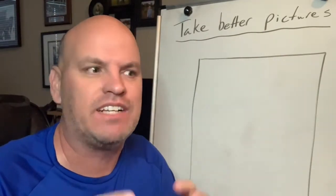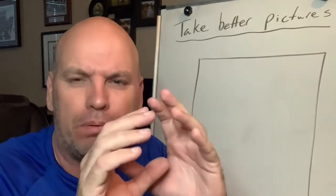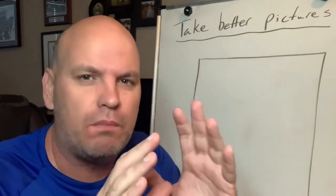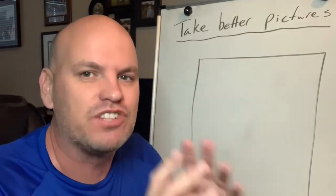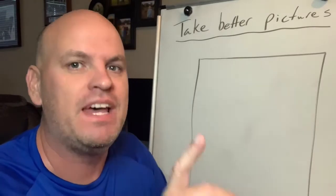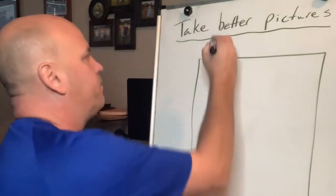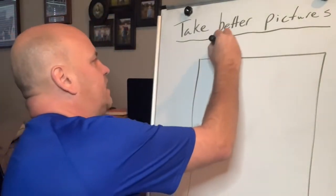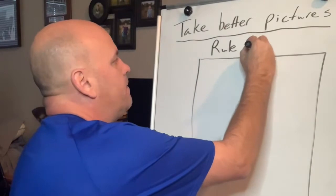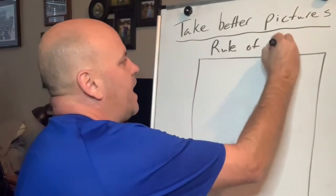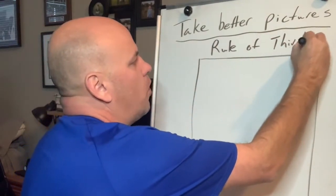Do you ever notice like sometimes the food or the people are really small, or it looks kind of awkwardly placed? There's a little tip called the rule of thirds, and it's a simple little tip that will make your photos look so much better.